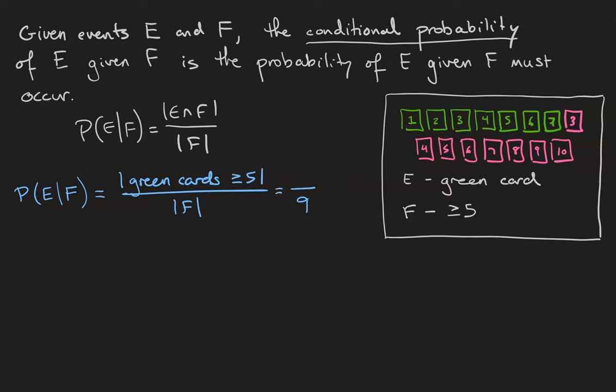We saw earlier that there are 9 cards that are at least 5, and if we count we see there are 3 green cards whose values are at least 5: the green 5, the green 6, and the green 7. Therefore, the probability of drawing a green card, given that the card's value is at least 5, is 3 out of 9.